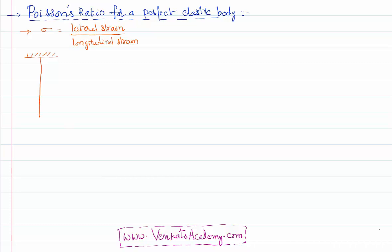If we have a thin wire fixed to a rigid support, and we apply a force at the bottom, this creates a strain along the length because the length of the wire increases by a small value delta l. So the strain along the length is equal to delta l by l. Simultaneously, the thickness of the wire also reduces, and a strain is created along the breadth — that kind of strain is perpendicular to the longitudinal strain.